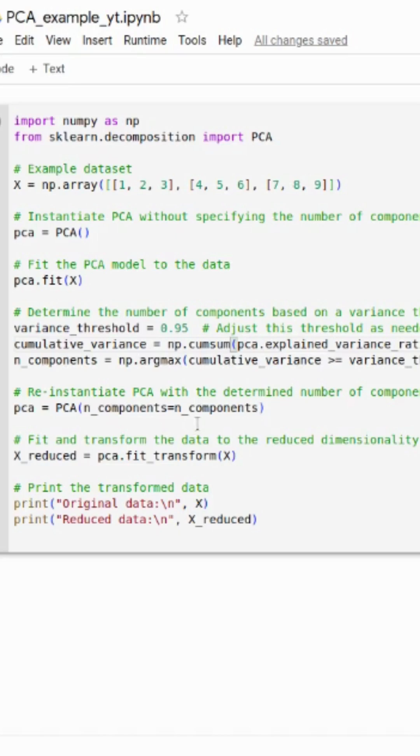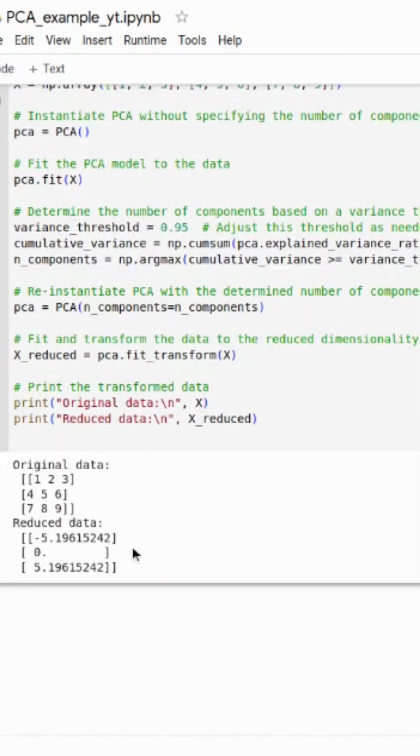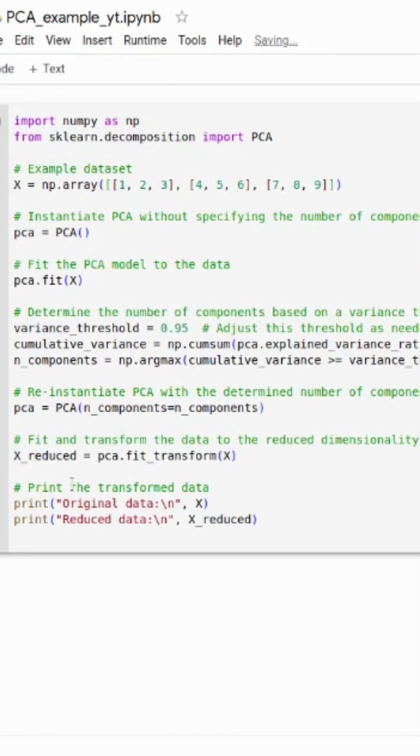After that we just assign our n_components to the components which we calculated and now we will run the code. So as you can see our original data is reduced in our reduced data. So this is an example for the principal component analysis.